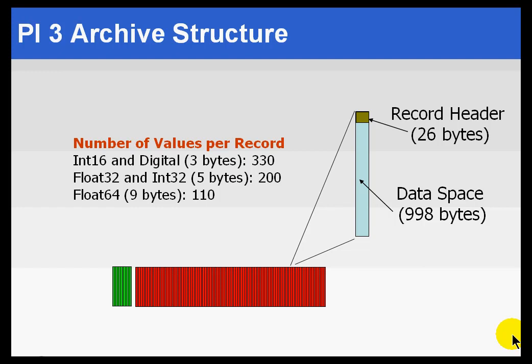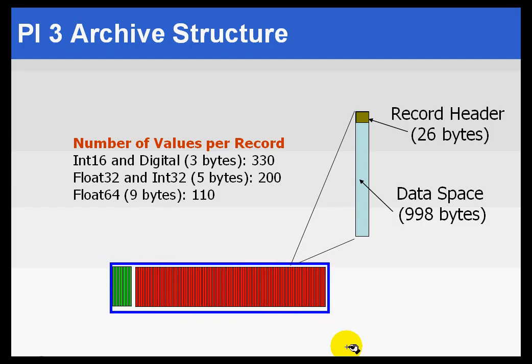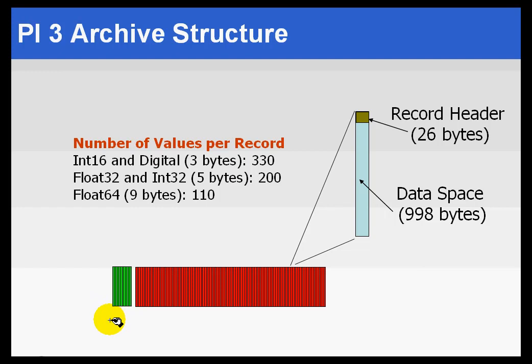Each PI archive file consists of a series of 1K records. These 1KB records can be divided into primary records and overflow records. It's best to think of the primary records as something generated at the very beginning of your archive file. We're going to create a primary record for each one of the tags in the PI system.